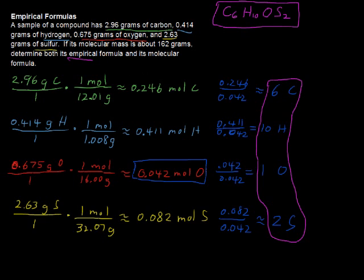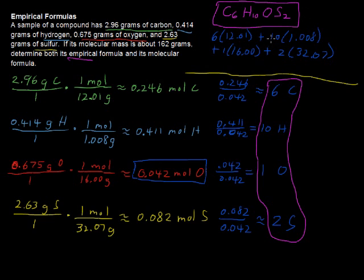And now, what about its molecular formula? Well, to determine its molecular formula, what you would do is find its molecular, or find the mass of this, just these ratios. So you'd have six times the molar mass of carbon, which is 12.01, plus ten times the molar mass of hydrogen, which is 1.008, plus one times the molar mass of oxygen, plus two times the molar mass of sulfur, which is 32.07. And after you do all that, you get a mass of this molar mass of 162.28 grams. And so, because it says the molecular mass is 162 grams, then we know that we have both the empirical and the molecular formula.